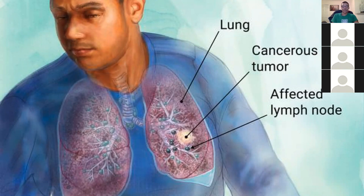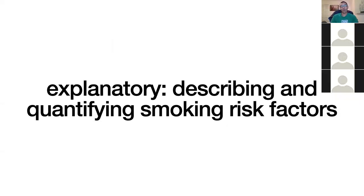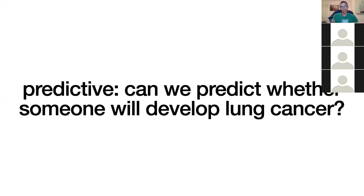In the case of lung cancer, if you're building an explanatory model you're interested in describing and quantifying smoking risk factors — perhaps to design some sort of intervention. Predictive modeling is simpler: you just want to know whether you can predict whether someone will develop lung cancer, without necessarily quantifying relationships or understanding the relative size of risk factors.